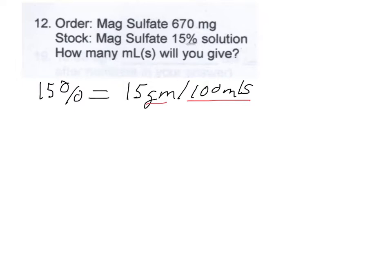So to set this up as a ratio you're going to put that the doctor wants 670 milligrams and that's equivalent to x mLs, and the strength of your solution which happens to be 15% is equivalent to 15 grams over 100 mL.